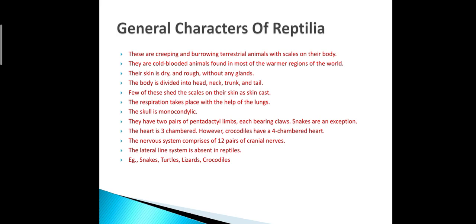Snakes are exceptional — mature snakes lack limbs. However, an interesting point is that in embryological study — the study of snakes is called serpentology — when the snake is in an embryonic condition it does have limbs, which later degenerate. So if a student asks how snakes are included in superclass Tetrapoda despite having no limbs, the answer is that in embryological development snakes have four limbs that later get degenerated.